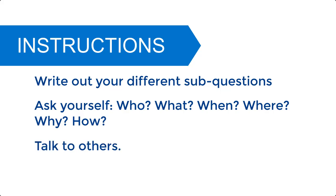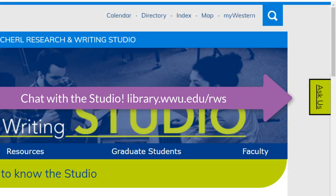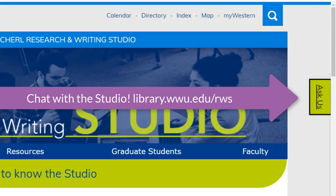It's also a good time to talk to somebody else about this. If you don't have somebody that you can chat with at this point, then the next best option would be to chat with somebody in the research and writing studio online, and they'd be happy to think through some of the sub-parts of where you might be going with your sub-questions in relation to your inquiry question.